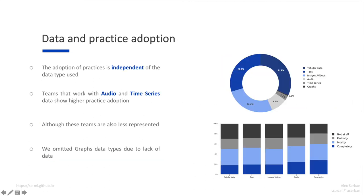We also analyzed the adoption of practices based on the data types used. From the plots on the right, we observed that there were six data types used: tabular, text, images or videos, audio, time series, and graphs. We observed that the adoption of practices is independent of the data types used. The first three data types — tabular, text, and images — have similar adoption rates, while teams working with audio and time series show higher practice adoption rates, though these teams are also less represented in the data. From the final analysis, we omitted the graph data type because we didn't have enough answers for it, and since our questionnaire is still running, we hope to collect more data about graphs in the future.